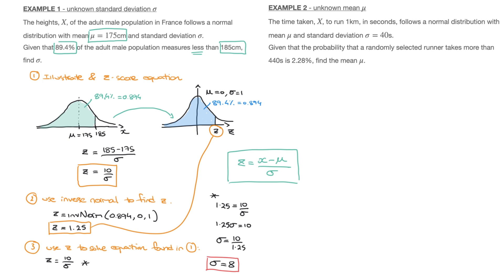Those three steps will always work when looking for an unknown mean or unknown standard deviation. In example two, we're told that the time X to run one kilometer follows a normal distribution with mean mu and standard deviation sigma equals 40 seconds. Given that the probability a randomly selected runner takes more than 440 seconds is 2.28%, find the mean mu. The standard deviation sigma is given; the unknown is the mean mu, and the x value 440 has corresponding area 2.28%.